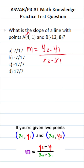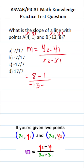This is X1, this is Y1, this is X2, this is Y2. So let's go ahead and plug those in and solve. This becomes Y2, which is 8, minus Y1, which is 1, over X2, which is negative 13, minus X1, which is 4.